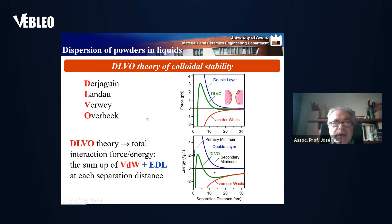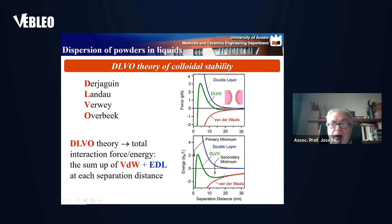Colloidal stability depends on the balance between the attractive van der Waals forces and the repulsive forces of the electrical double layer. The total energy has a barrier that opposes particles approaching each other. If they have sufficient kinetic energy, they might overcome the energy barrier and fall into a primary minimum. But usually, under good dispersion conditions, we have a secondary minimum where particles are weakly flocculated and can be easily redispersed.